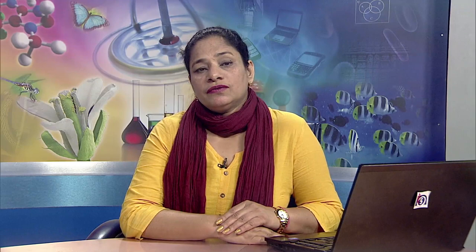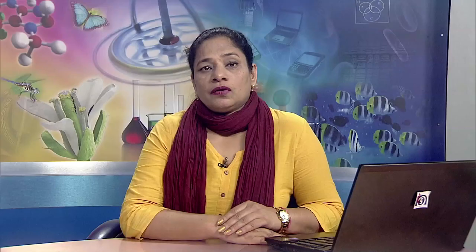Coastal erosion of soil occurs along seashores. It is caused by the wave action of the sea and the inward movement of the sea into the land. The consequences of soil erosion: erosion removes the fertile part of the soil and the bulk of nutrients and organic matter are lost, leaving behind infertile subsoil. Sheet, rill and gully erosion also cause siltation of rivers, streams and fields.